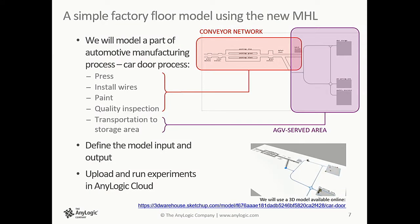I will create in front of you a simple model of a factory — specifically the part where car doors are produced. Our model will have two parts: a conveyor network where car doors are produced, containing a press station, a station where wires are installed, free painting lines, and quality inspection. After that, doors are packed into batches and delivered to a storage area by AGVs. We will define inputs and outputs, and upload the model to AnyLogic Cloud at the end.